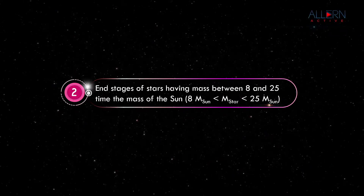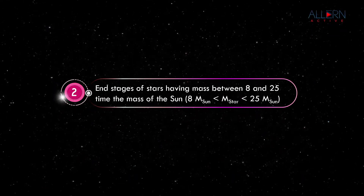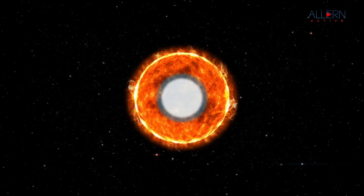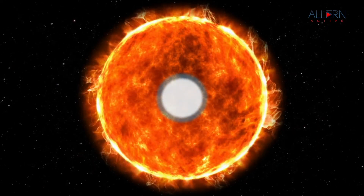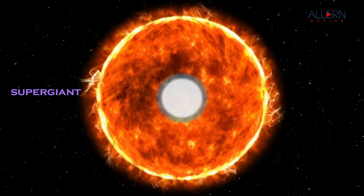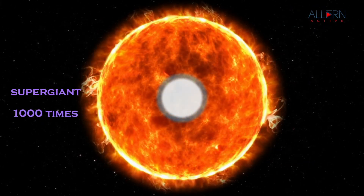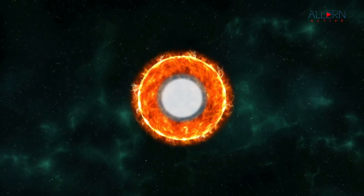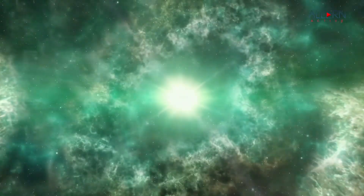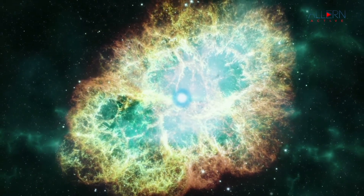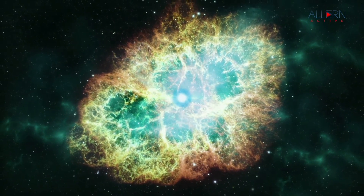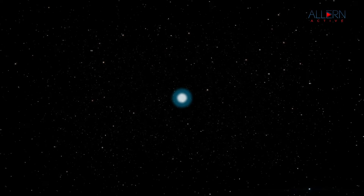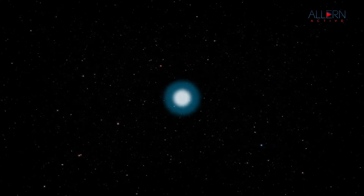The next group is for stars having mass between 8 and 25 times the mass of the Sun. These stars also go through the red giant stage and later through the super giant stage, during which their size may increase a thousand times. The huge explosion called the supernova explosion which occurs at last is very powerful — so much energy is given off that we can see the star during the day. The central portion left behind after the explosion contracts and its size becomes as small as about 10 kilometers.